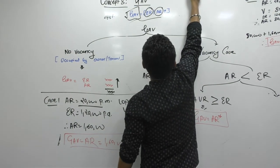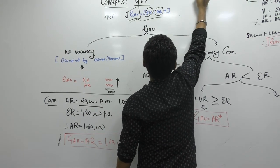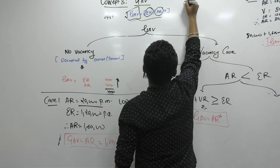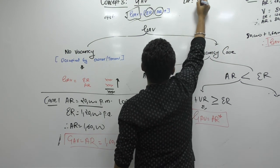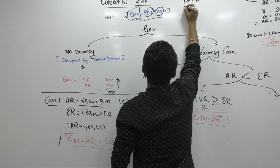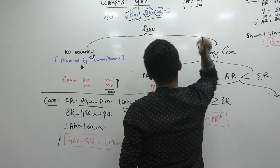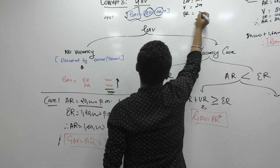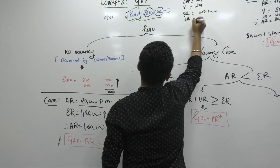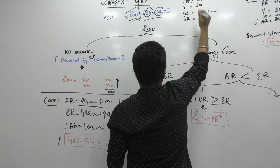Case 3: actual rent is equal to 5,000 rupees per month. Let out period is 10 months, vacancy period is 2 months, and expected rent is equal to 1,20,000. What is my actual rent? 50,000.